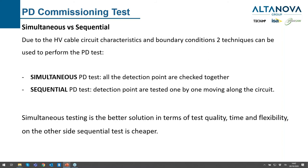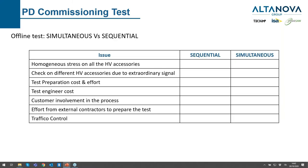During commissioning there is another choice to make: simultaneous or sequential PD testing. In simultaneous PD testing, all detection points are checked together. In sequential testing, detection points are checked one by one, moving along the circuit. Simultaneous is a better solution in terms of quality, time, and flexibility, but it requires many operators, many acquisition units, or an infrastructure to have all signals available. Normally, sequential is the cheapest way to test the cable.